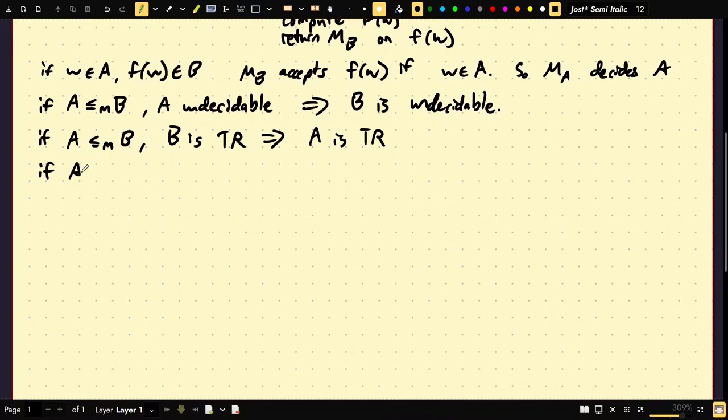And then from that, it follows if A, again, A is reducible to B, A is not Turing recognizable. That implies that B is not Turing recognizable. So, if we can show a reduction to an undecidable problem, that should imply that that problem is also undecidable.